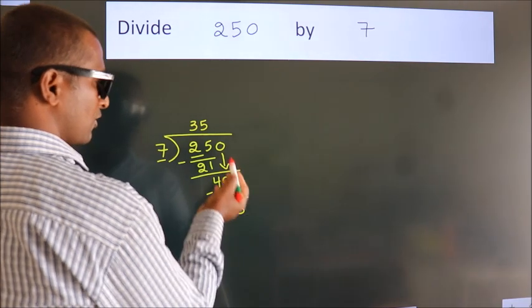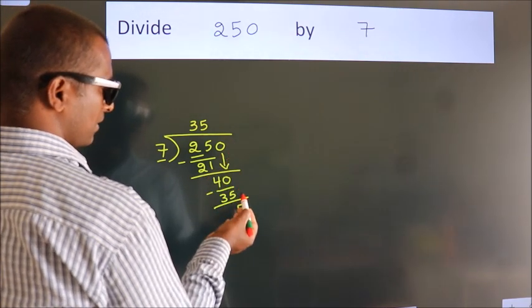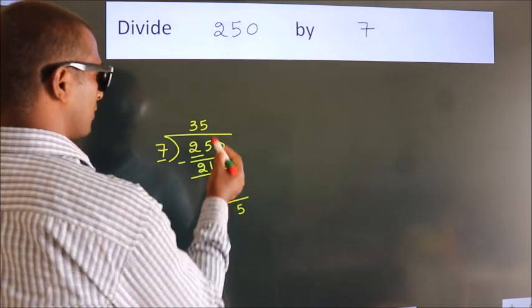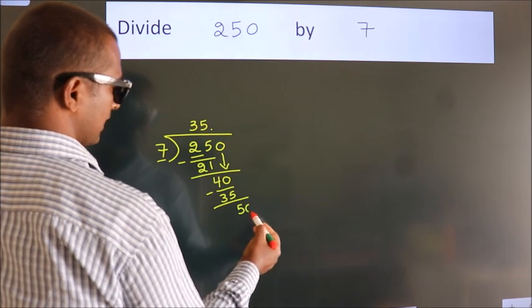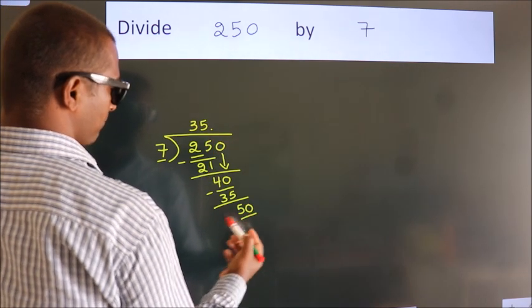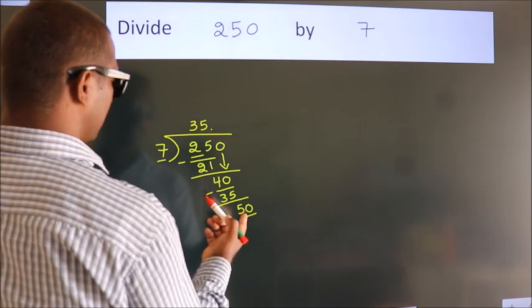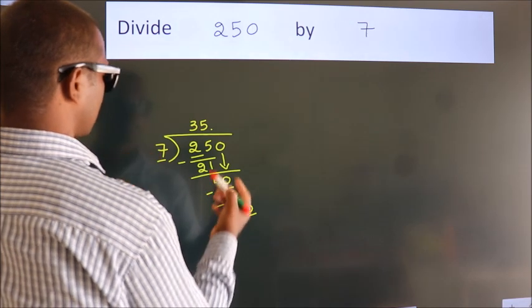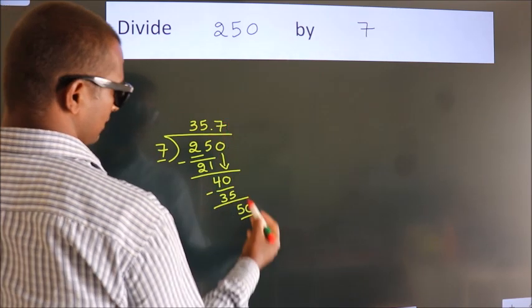After this, no more numbers to bring down. So what we do is put a dot and take 0. So 50. A number close to 50 in the 7 table is 7 sevens, 49.